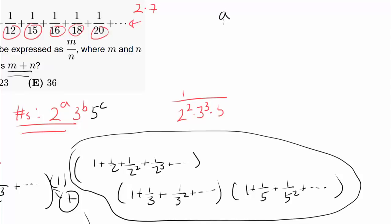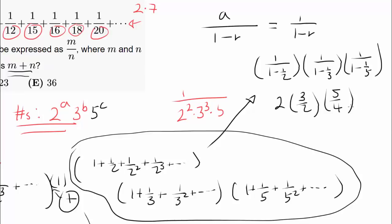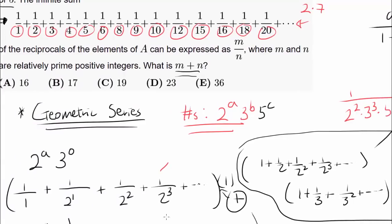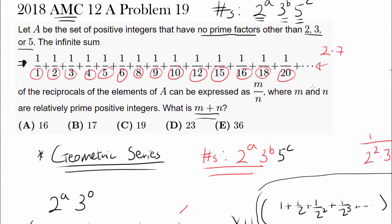The sum of an infinite geometric series is A over (1 minus R), and since the first term is always 1, each series evaluates to 1 over (1 minus R). So we get 1/(1 − 1/2) times 1/(1 − 1/3) times 1/(1 − 1/5), which equals 2 times 3/2 times 5/4, which is 15/4. So M over N is 15 over 4, and M plus N equals 15 plus 4, which is 19. The answer is C.